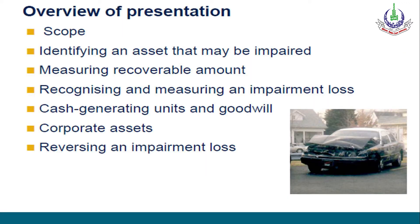Overview of presentation: Scope; Identifying an Asset that May be Impaired — which assets we will look at for impairment; Measurement of Recoverable Amount — how it will be determined; Recognizing and Measuring an Impairment Loss — how to recognize and measure it; Cash Generating Units; Goodwill; Corporate Assets; and Reversing an Impairment Loss.